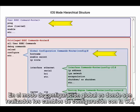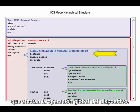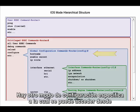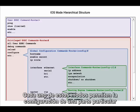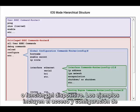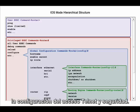The global configuration mode is where CLI configuration changes are made that affect the operation of the entire device. There are other specific configuration modes which may be entered from the global configuration mode, each allowing the configuration of a particular part or function of the device. Examples include accessing and configuring a specific interface, and configuring Telnet access and security.